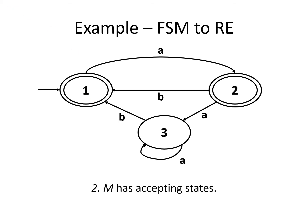In step 2, if M has no accepting states, then halt and return the regular expression as null. In this FSM, we have two accepting states, state 1 and state 2, so M does have accepting states.